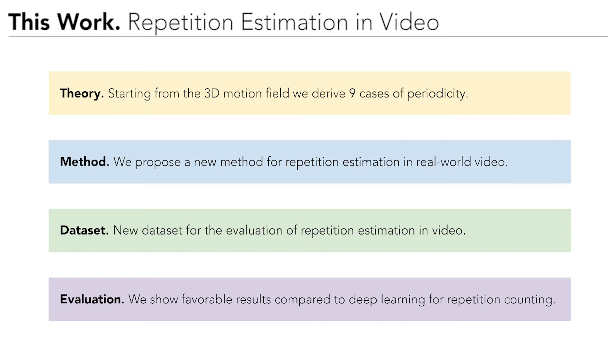We revisit the theory of periodic motion. Starting from the 3D motion field tied to a moving object, we use first-order differential analysis to arrive at 9 fundamental cases of periodic motion.